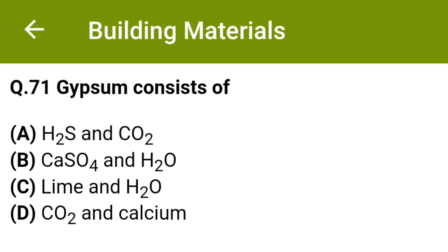Gypsum consists of: option A, H2S and CO2; option B, CaSO4 and H2O; option C, lime and H2O; option D, CO2 and calcium. The correct answer is option B, CaSO4 and H2O.